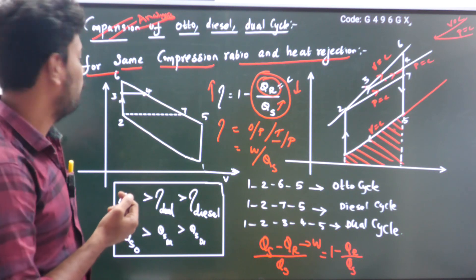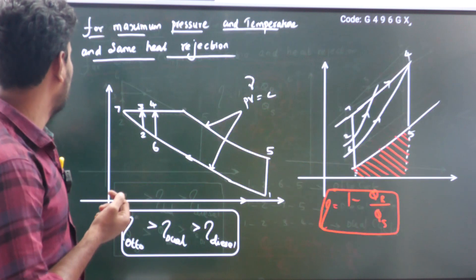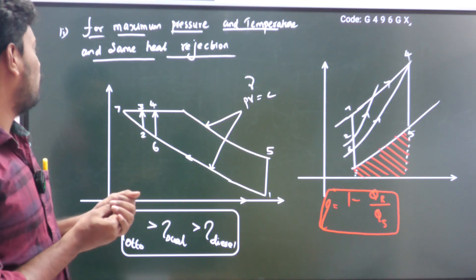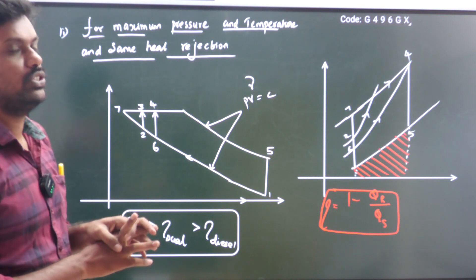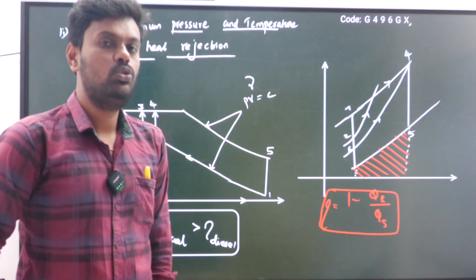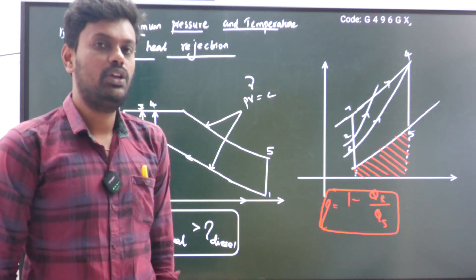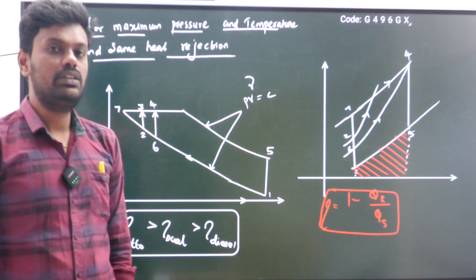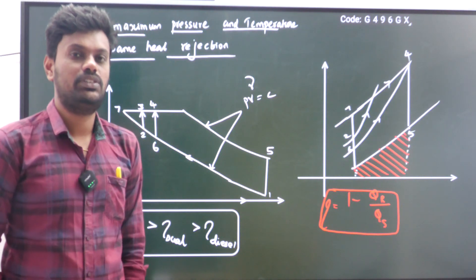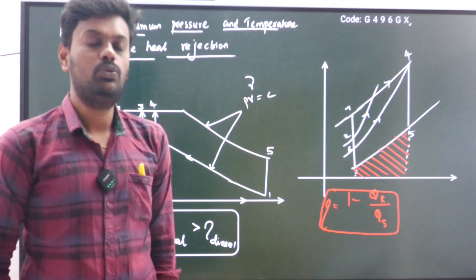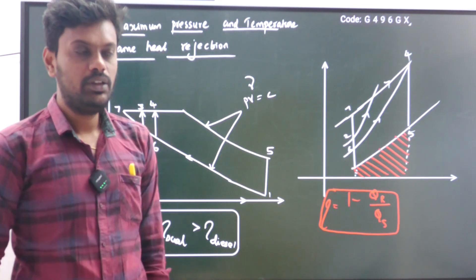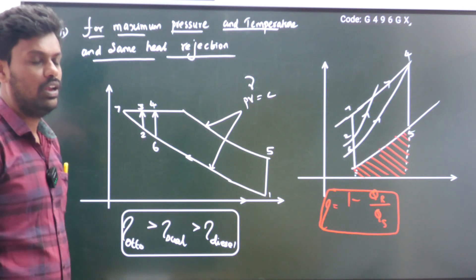The second topic is based on maximum pressure and temperature with the same heat rejection. Based on these conditions, we need to find out how the efficiency of all three cycles varies and which cycle has more efficiency.